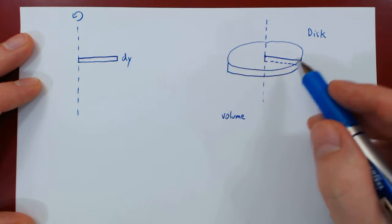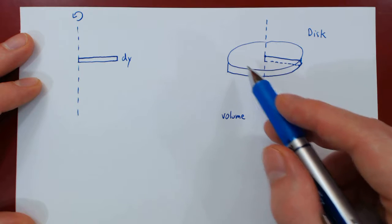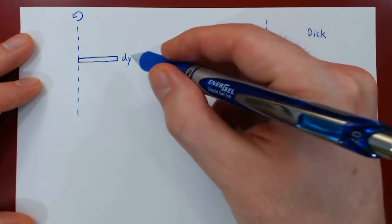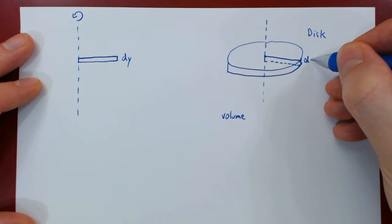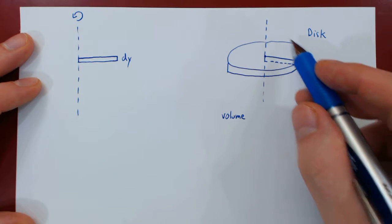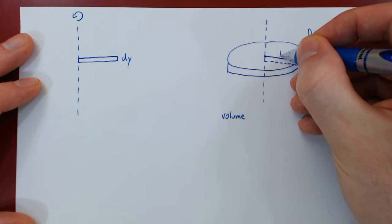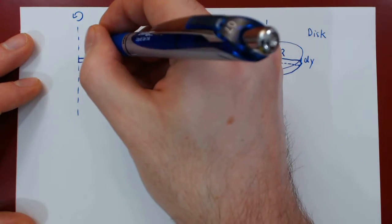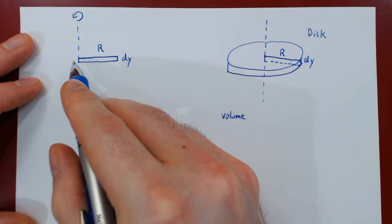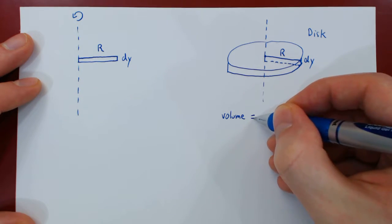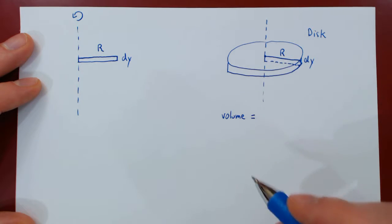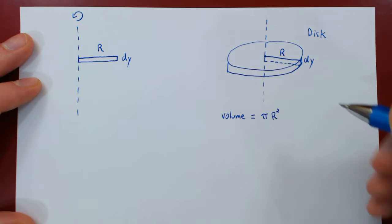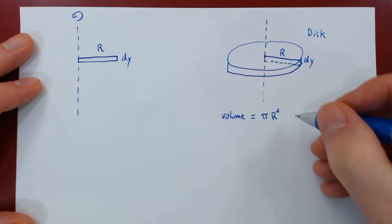All we need is the area of the surface of the disk times the thickness of the disk. The thickness is the width of our rectangle, dy, and the surface of the disk is of course a circle. The radius of the circle is the length of the rectangle, so the area of the surface is pi r squared, times the thickness dy.